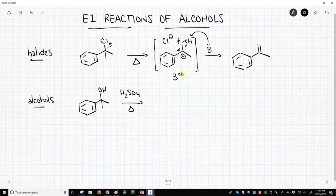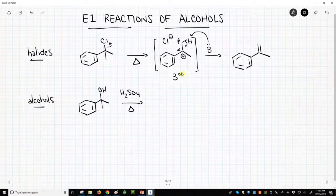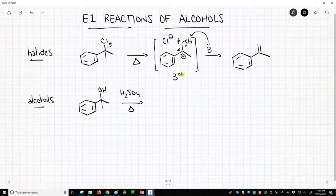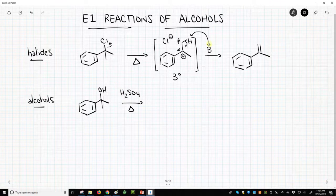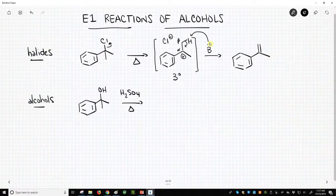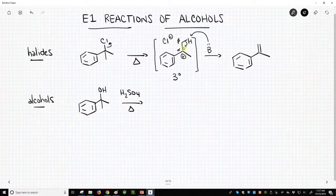And once we form the carbocation, carbocations can do two things. They can get attacked by a nucleophile, or they can lose a beta-hydrogen. Attacking with a nucleophile would simply take us backwards, and we're not going to go backwards. We're going to go forwards, so we're going to lose the beta-hydrogen, and there will be some base in this reaction. If you wanted to use the chloride, you could use the chloride. We'll lose this beta-hydrogen to the carbocation, and we'll form our alkene.